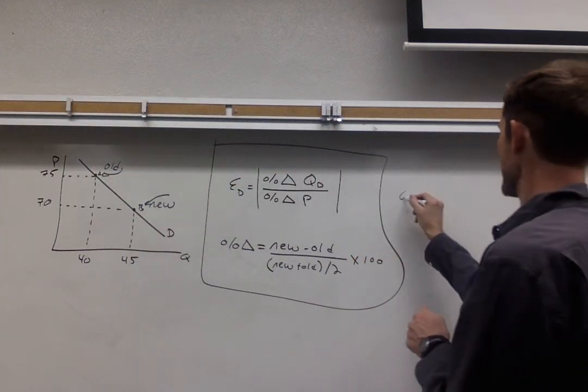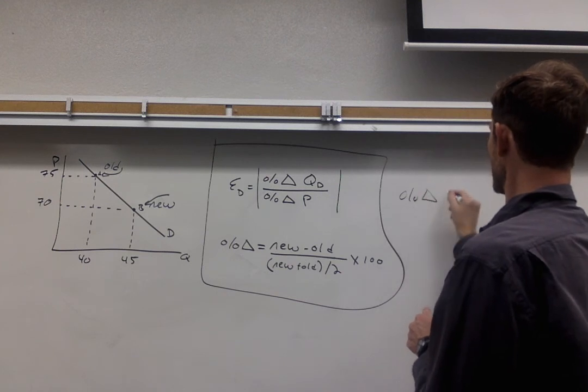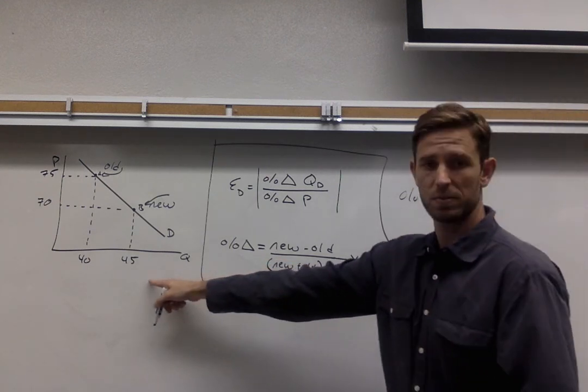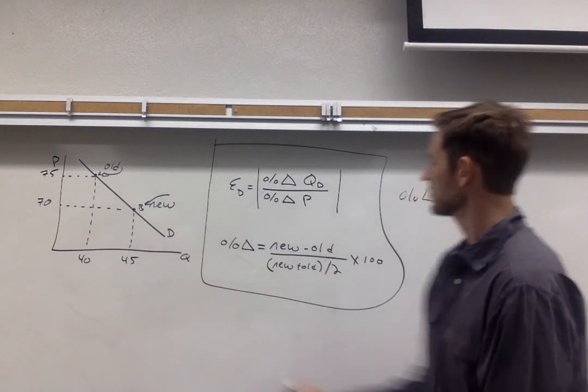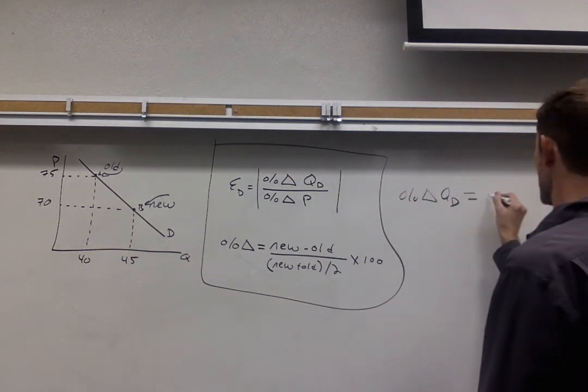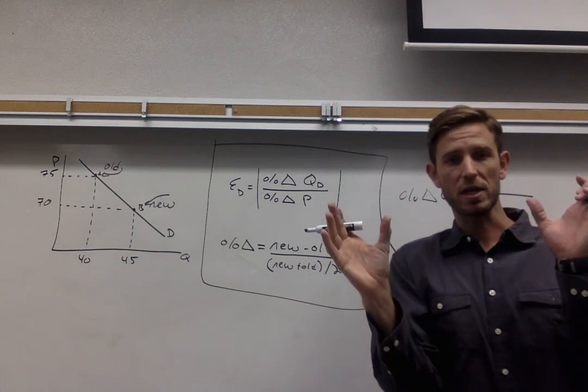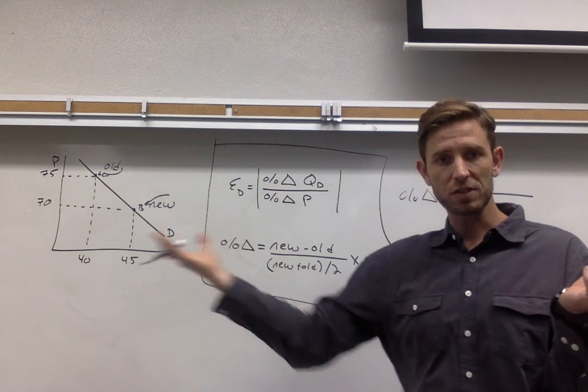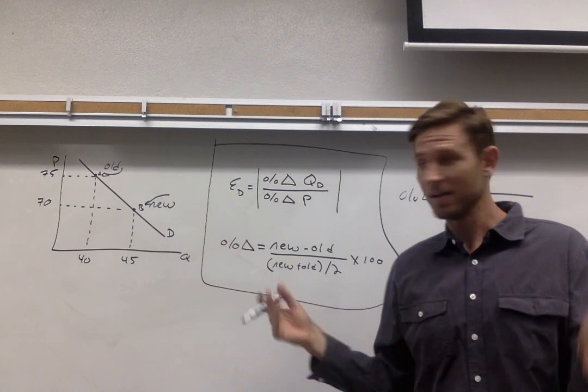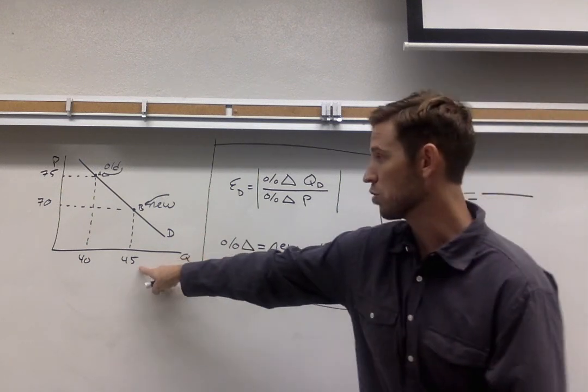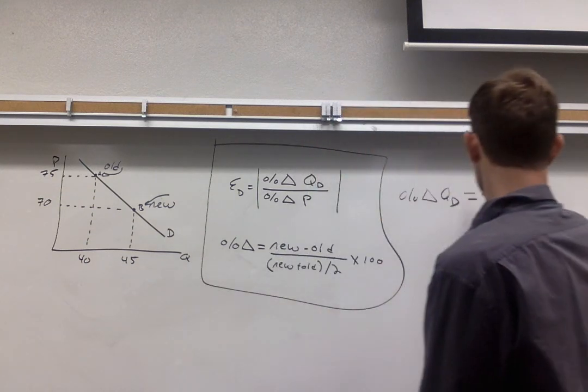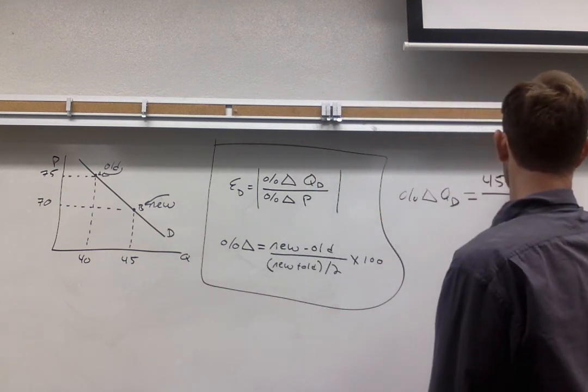So we're going to calculate then this percentage change in quantity demanded using this formula with these particular numbers. On top we want the difference between the two quantities. So that's an easy calculation to do. To find the difference you're just going to subtract one from the other. So new minus old, my new quantity is 45. I'll subtract from that my old quantity.